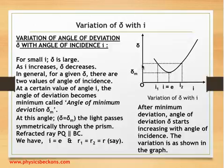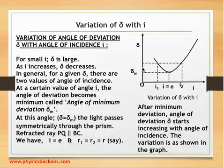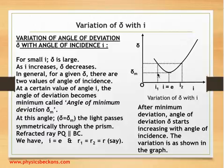You can see that a given angle of deviation can be produced when the angle of incidence is i₁ or i₂. At δ equal to δₘ, the two values i₁ and i₂ become equal, and we have i equal to e, or angle of incidence equal to angle of emergence.